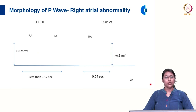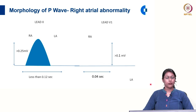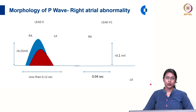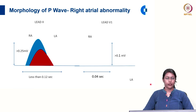In right atrial abnormality, in lead 2, the initial component contributed by the right atrium will be increased in amplitude, while the latter component contributed by the left atrium remains the same. So the amplitude of the P wave increases — more than 0.25 millivolt — whereas the duration remains the same, less than 0.12 second.